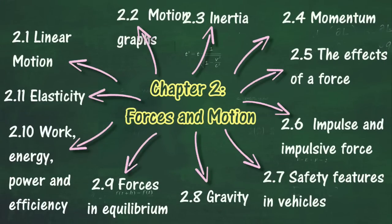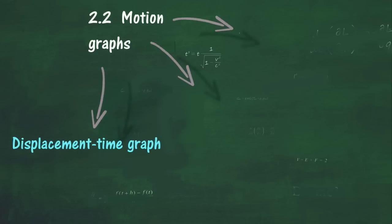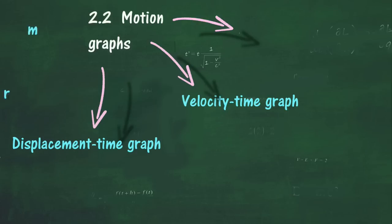In Section 2.2, we will learn about the way to Analyze Motion Graphs. At the end of this section, you should be able to: Plot and Interpret Displacement-Time Graphs, Plot and Interpret Velocity-Time Graphs, Deduce from the shape of a Velocity-Time Graph when a body is At Rest, Moving with Uniform Velocity, or Moving with Uniform Acceleration, and Determine Distance, Displacement, Velocity and Acceleration from a Velocity-Time Graph. Solve Problems on Linear Motion with Uniform Acceleration.